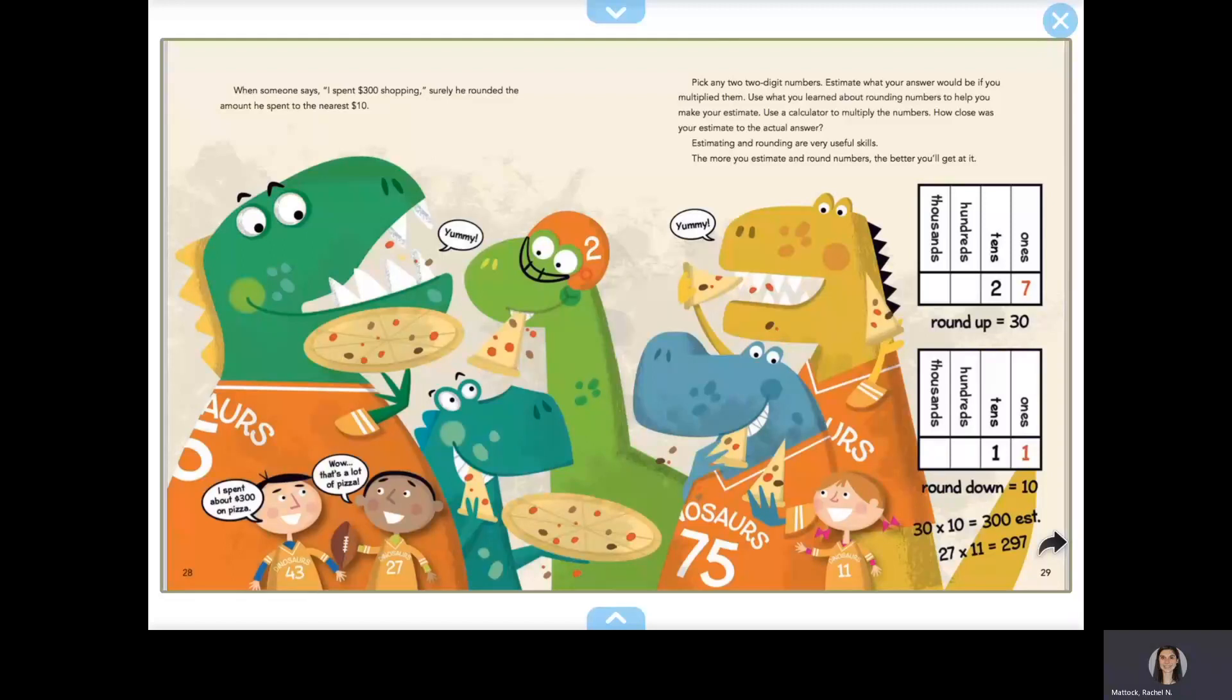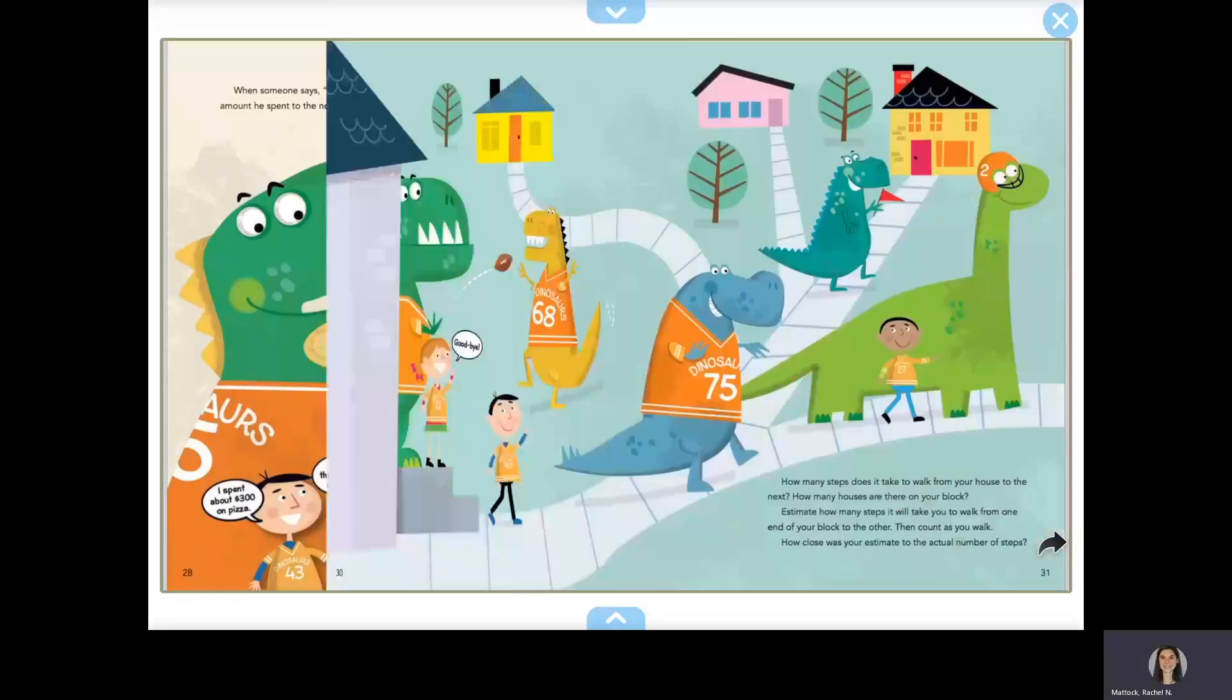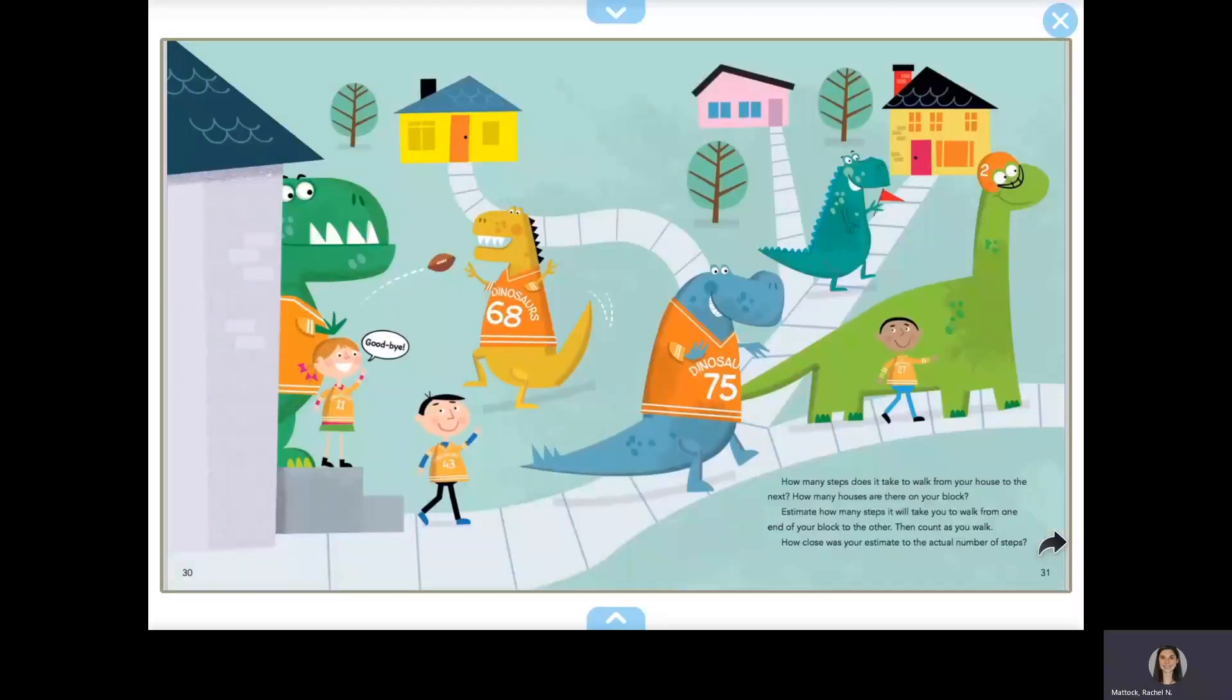Estimating and rounding are very useful skills. The more you estimate and round numbers, the better you'll get at it. How many steps does it take to walk from your house to the next? How many houses are there on your block? Estimate how many steps it will take you to walk from one end of your block to the other, then count as you walk. How close was your estimate to the actual number of steps?